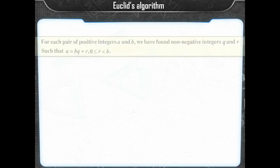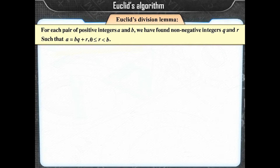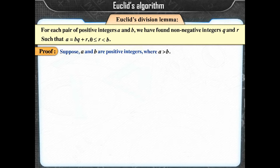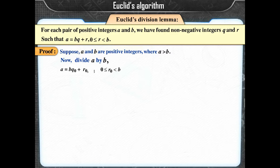Proof of Euclid's division algorithm: Suppose A and B are positive integers where A is greater than B. Divide A by B to get: A = B·Q0 + R0, where 0 ≤ R0 < B.